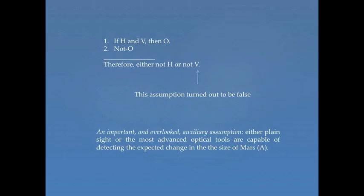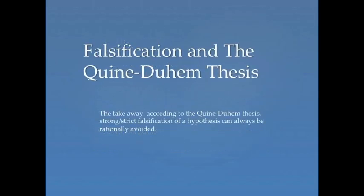And in fact, that's actually what turned out to be the case. Once better instruments were created, better telescopes, we were able to detect a difference in the size of Mars depending on the Earth's location in its orbit. So what's the takeaway? According to the Quine-Duhem thesis, strong or strict falsification can always be rationally avoided.